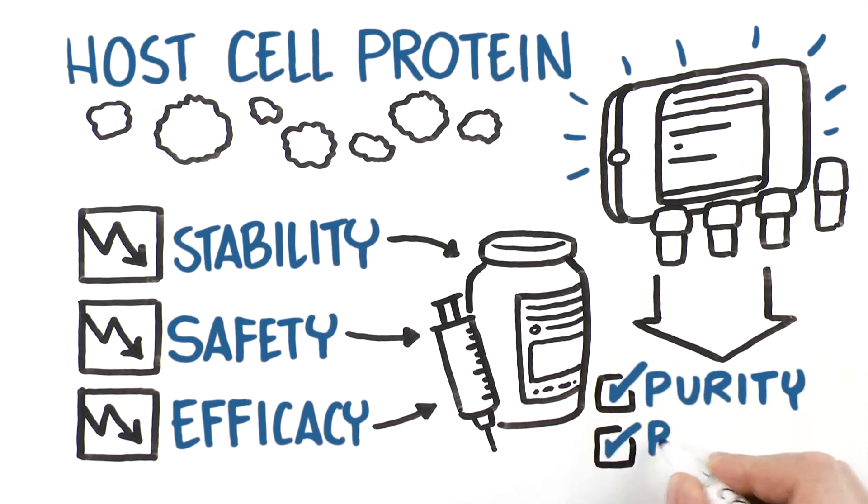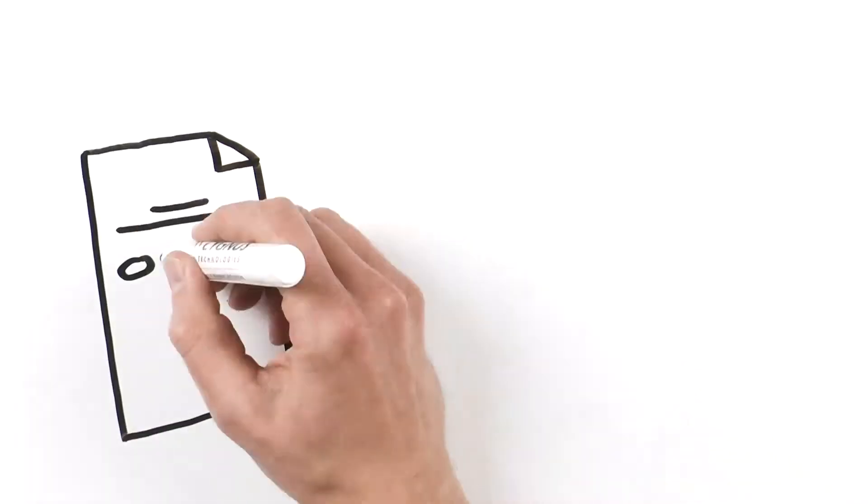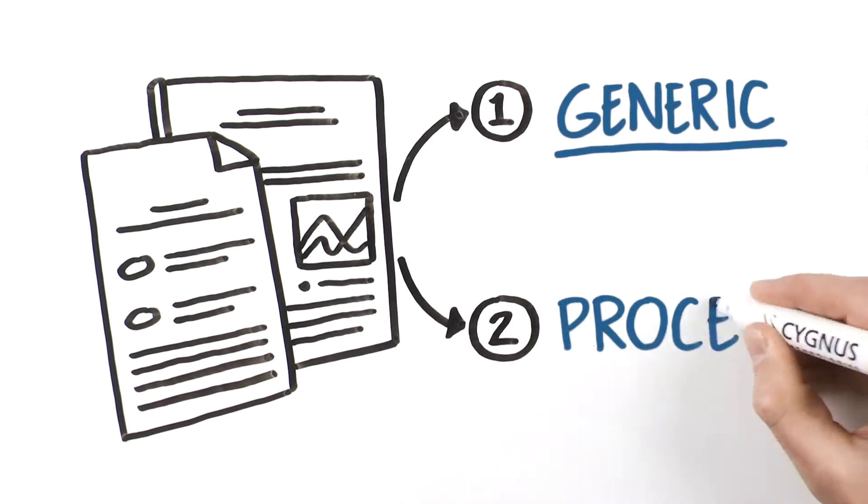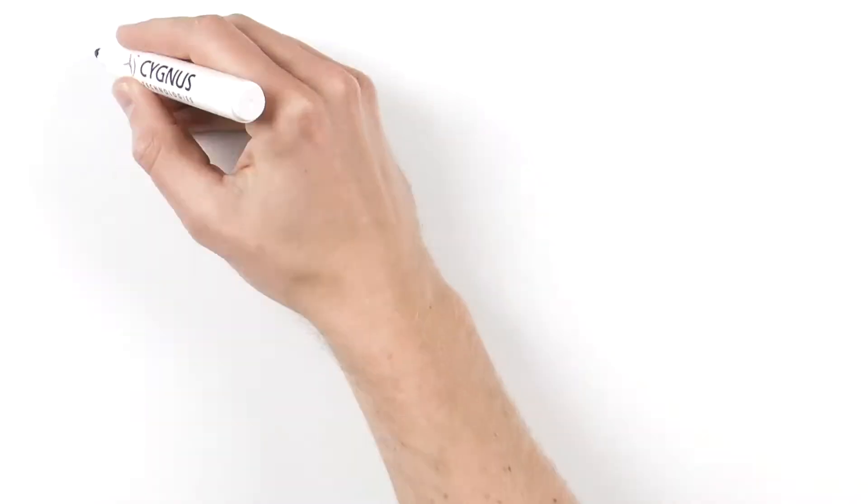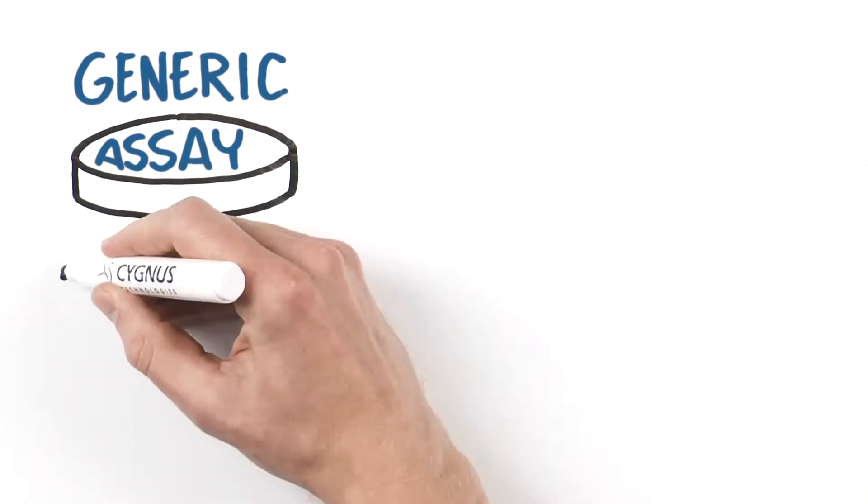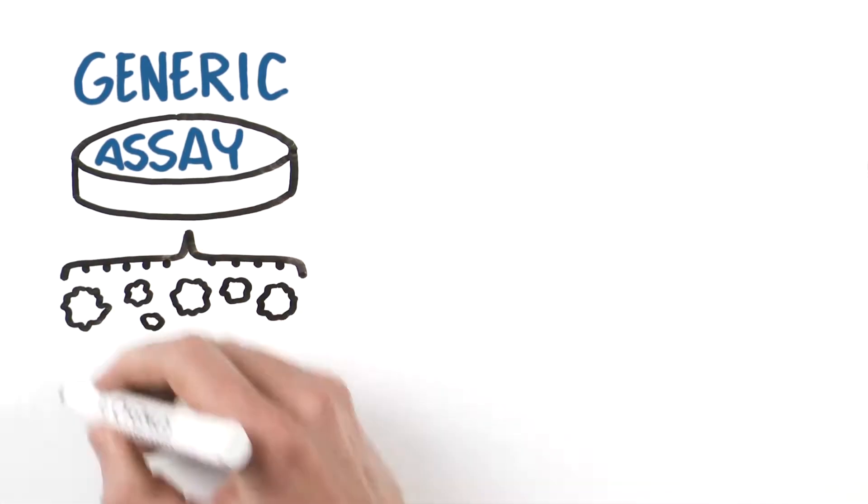Regulatory guidelines and publications commonly refer to two different types of HCP ELISA: generic and process-specific. These sources define generic assays as assays that measure HCPs for an expression platform.